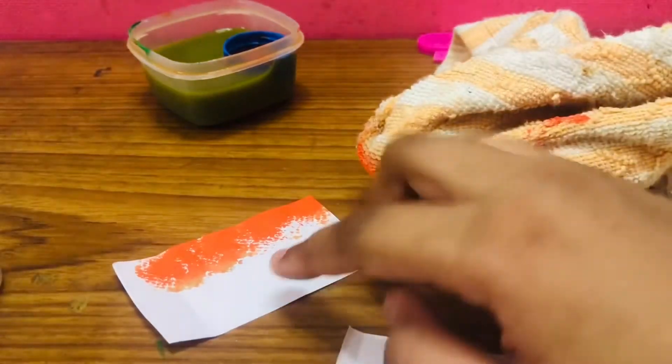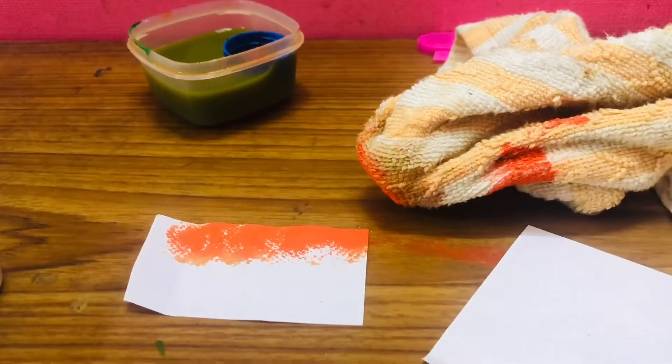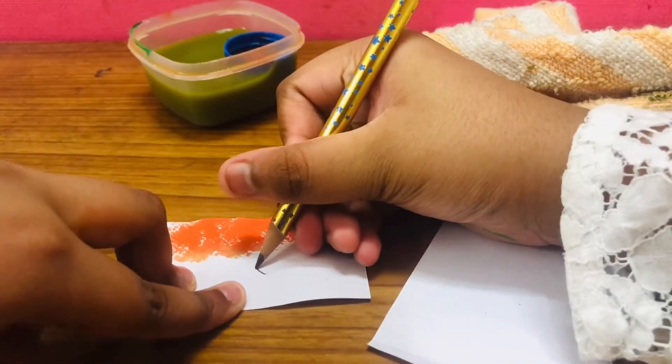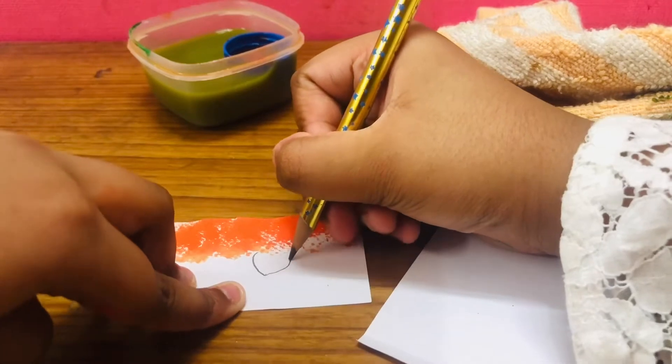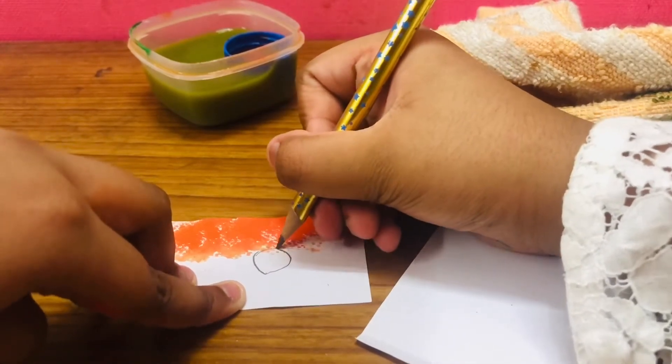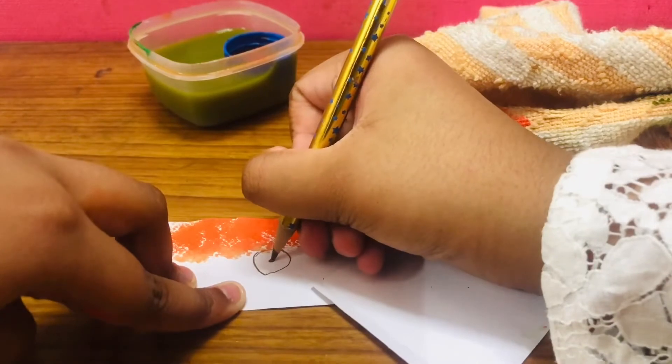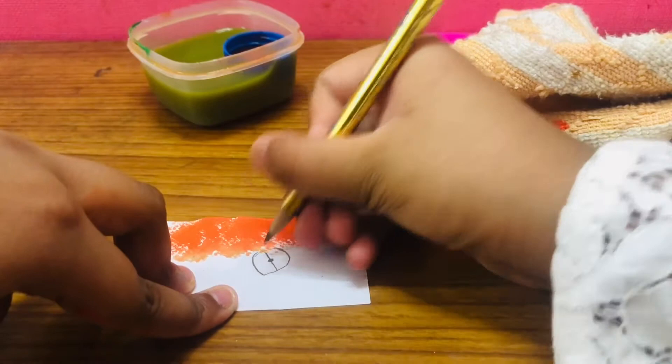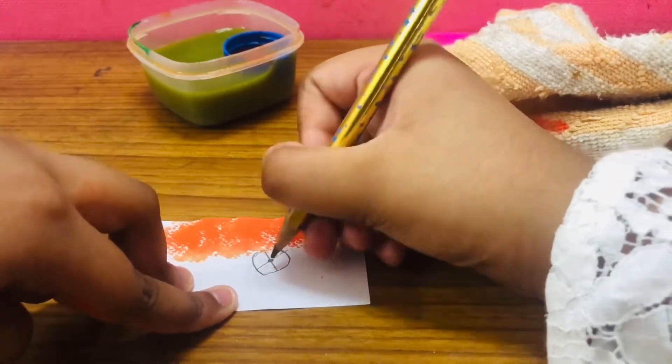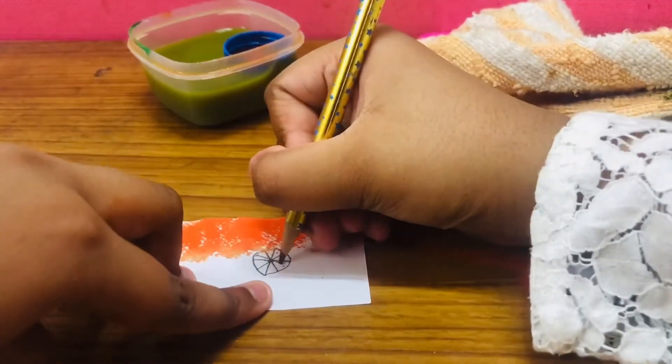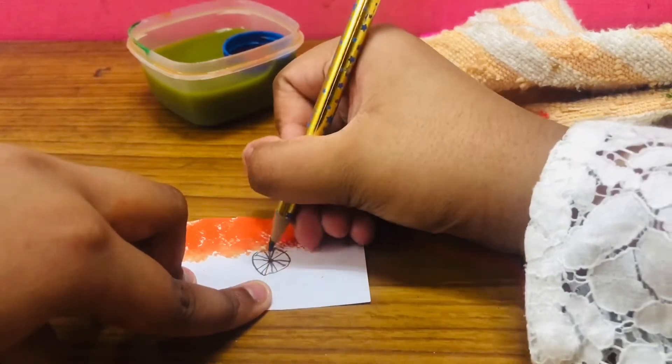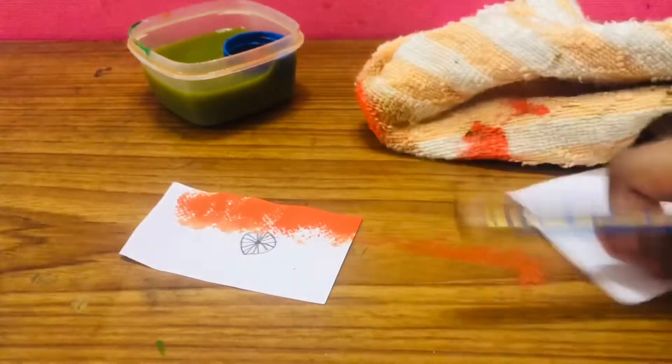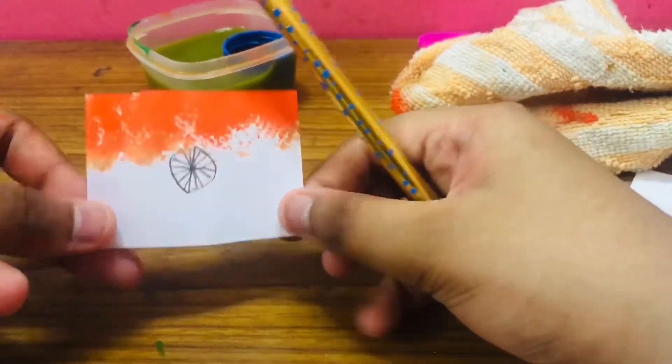Then you're gonna take a pencil. Then draw a big circle, the Ashoka Chakra. Then draw a circle between it. Then you can make the lines. It should look like this.